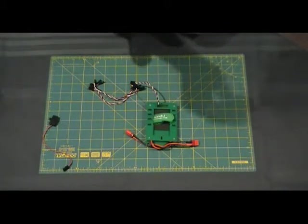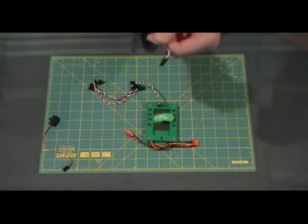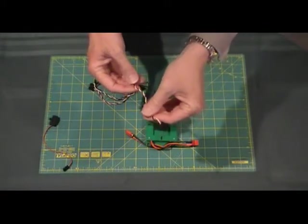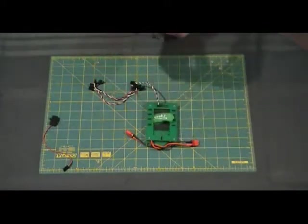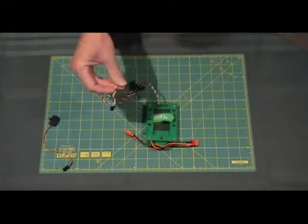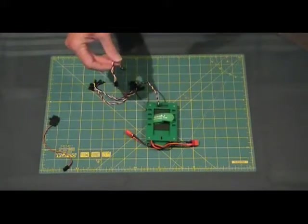The other end is just a standard JR and that is very suitable for just plugging into most of the other receivers that are on the market. Even the Futaba you can put it in there without a problem.